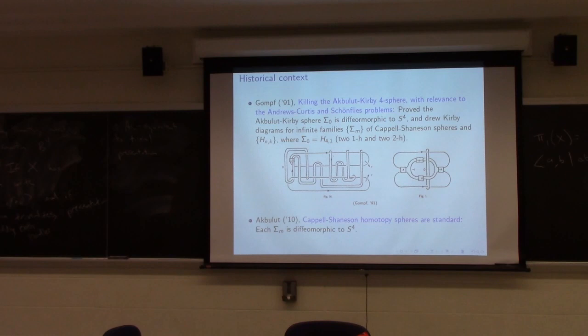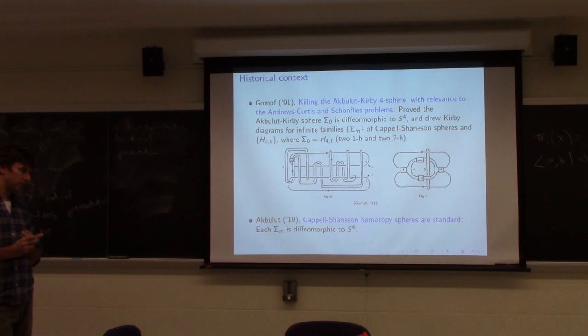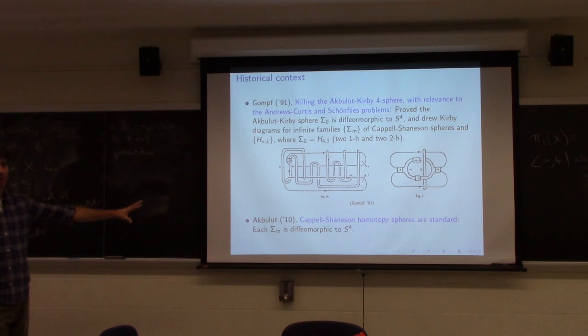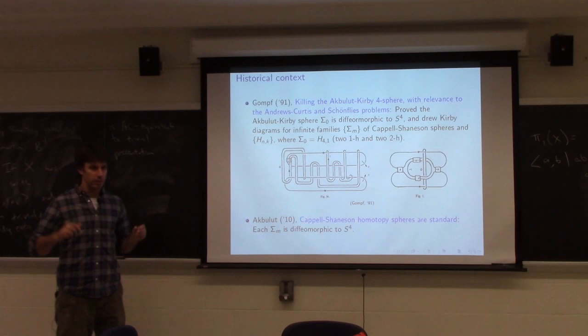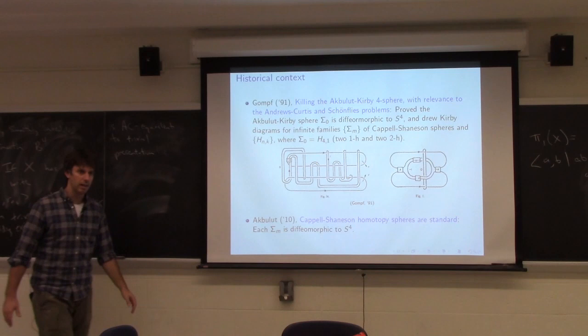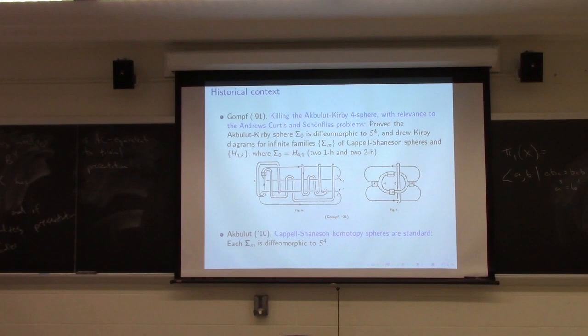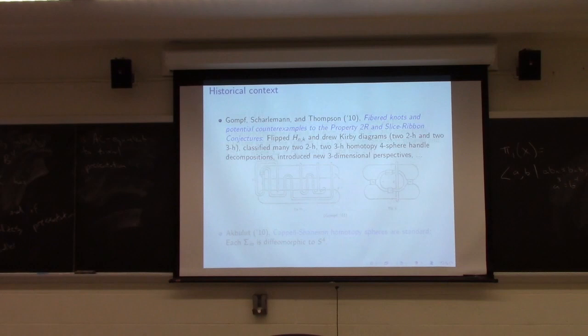Donaldson proved not that there are non-standard S4s, but that there are exotic four-manifolds — manifolds which are homeomorphic but not diffeomorphic — though not S4. There are also topological four-manifolds admitting no smooth structure. Exotic four-manifolds are known to exist, but it's not known in the case of S4. The smallest exotic pair is likely CP2 connected with some copies of CP2-bar.